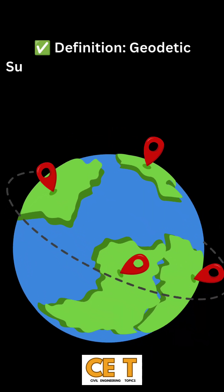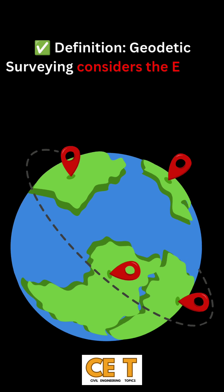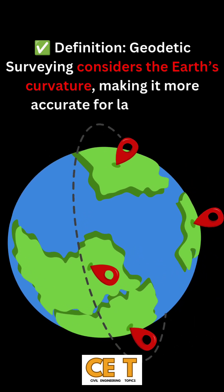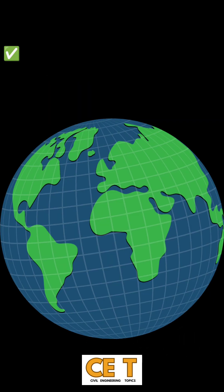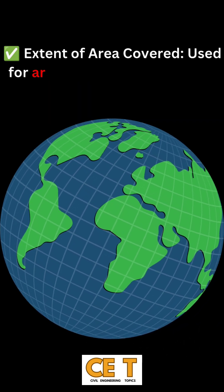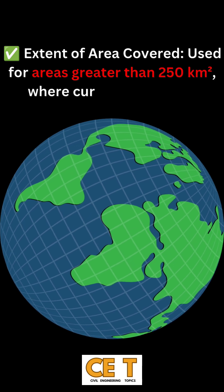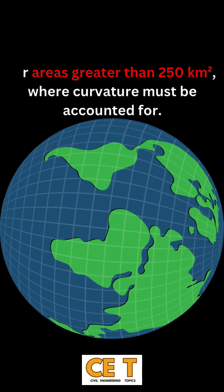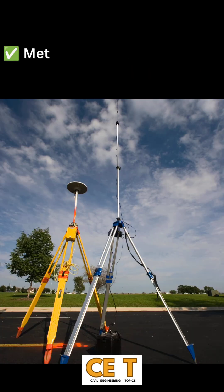Geodetic surveying considers the earth's curvature, making it more accurate for large areas. It is used for areas greater than 250 square kilometers where curvature must be accounted for.